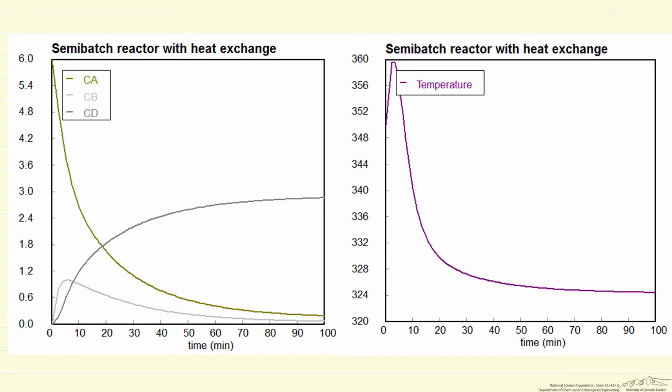So here's the output from POLYMATH. The concentration of A decreases with time, as we expect. The concentration of B is going through a maximum in this series reaction, and then the concentration of D increases continuously, and we've run this long enough that the concentration of A gets pretty low.